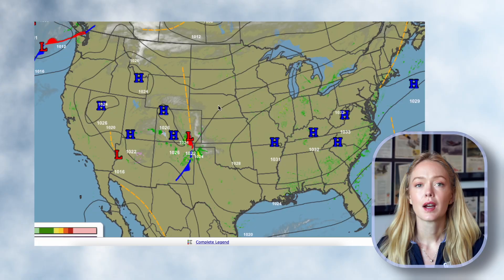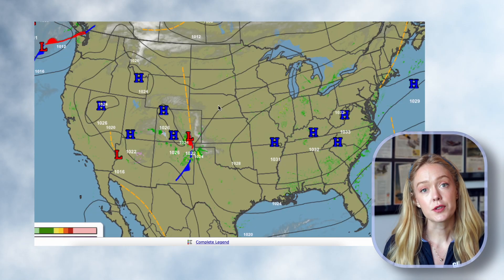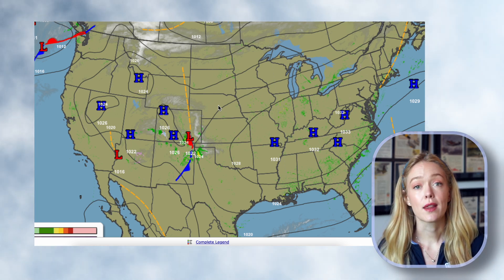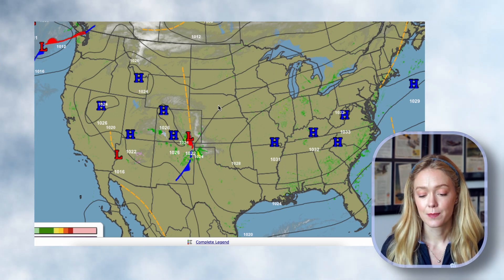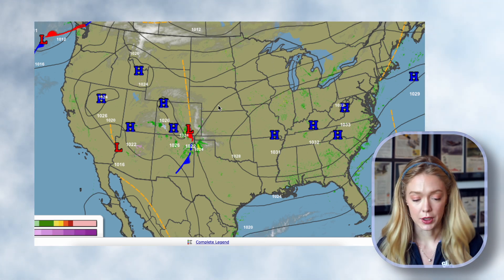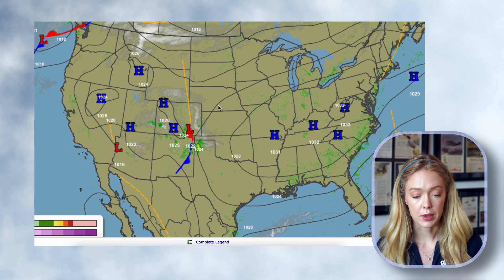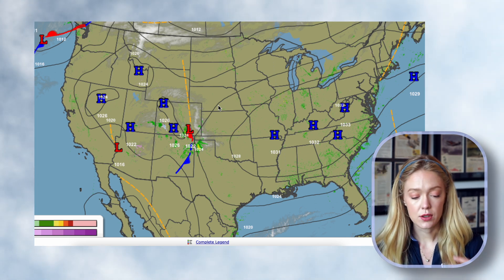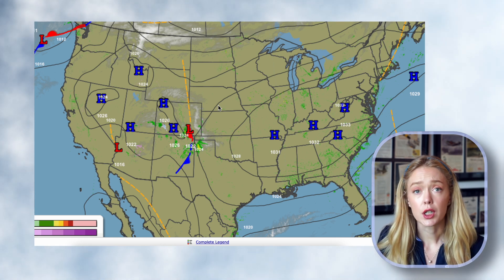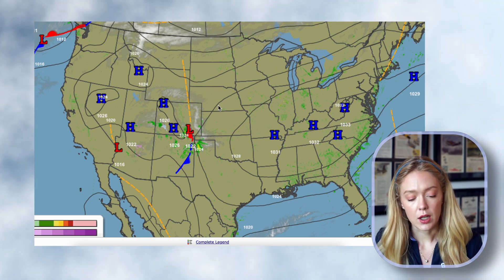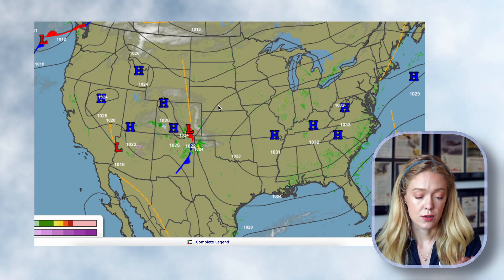We're going to start off, as always, with the surface analysis chart. The surface analysis depicts frontal and pressure systems across the country, and we can use this chart to understand and explain why the weather that we see exists. We have high pressure across so much of the country — the eastern half — beautiful high pressure, until we move westerly to the Nebraska-Colorado area. We see a little bit of low pressure with a large trough extending northerly toward Montana, and a cold frontolysis down toward Mexico.